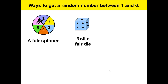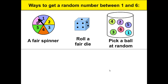You can roll a fair die. Again we use the word 'fair' — it would not be a random number if it landed on the number 3 more often than any other number. Or we can pick a numbered ball from a container, like in the lottery.